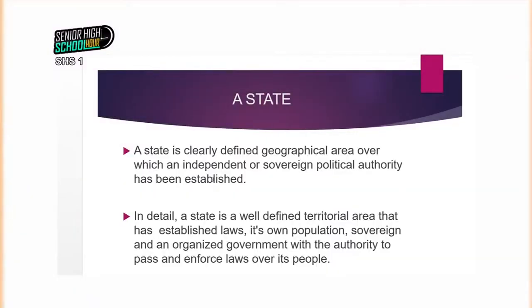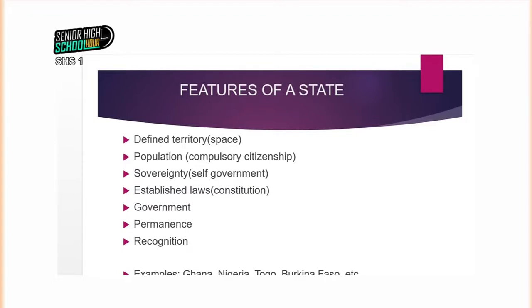In detail, we can say that the state is a well-defined territorial area that has established laws, its own population, is sovereign, and has an organized government with the authority to pass and enforce laws over its people. This means that geographically it can be located, and within this particular area of jurisdiction it has its own established laws, its own population — meaning it has citizens — it is sovereign, which means it is independent, and has an organized government with the authority to pass and enforce laws over its own people without outside interference.